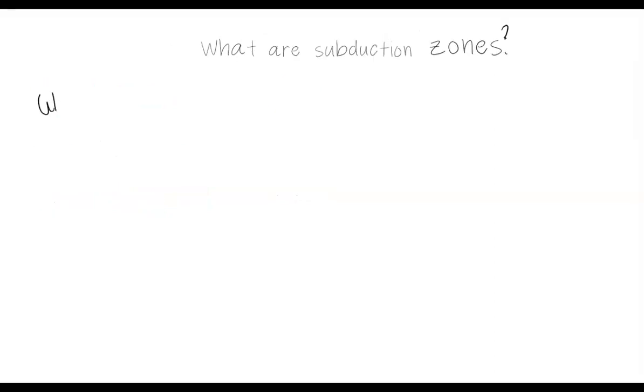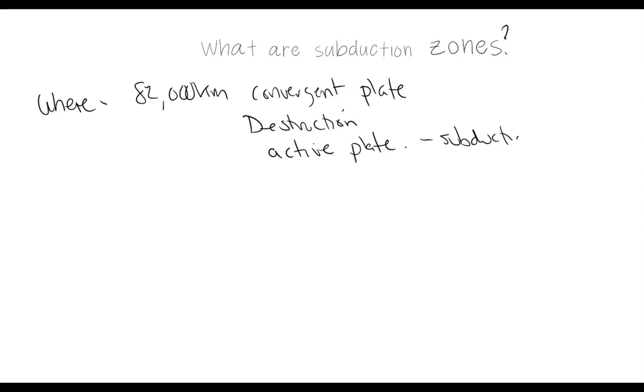So where are these subductions? There's about 82,000 kilometers of convergent plate boundary on Earth, and they are the destructive plate boundary. It's the active plate margin that includes the subduction. Obviously, some of this 82,000 would include the Indian-Eurasian convergence, which is mostly a continent smashing a continent, and that causes orogeny and the Himalayan mountains as an example.